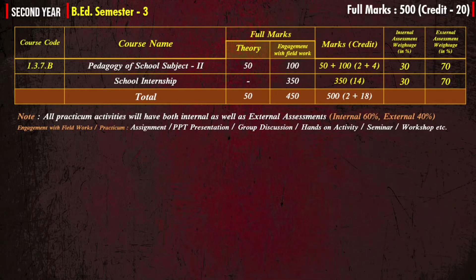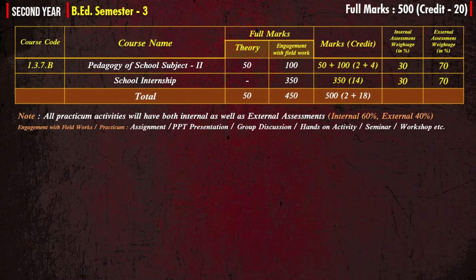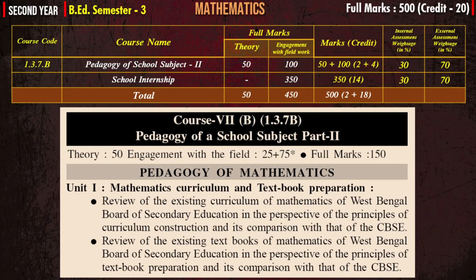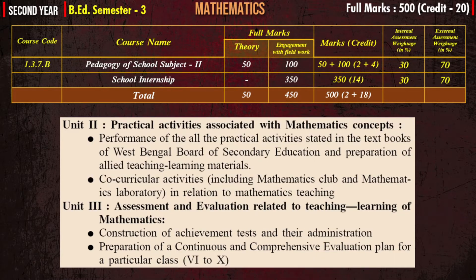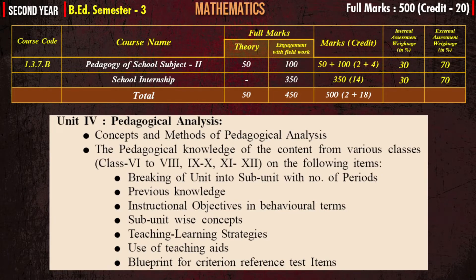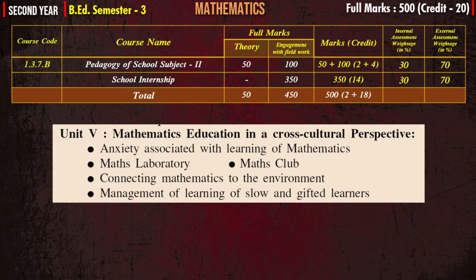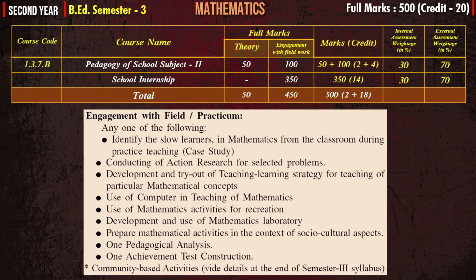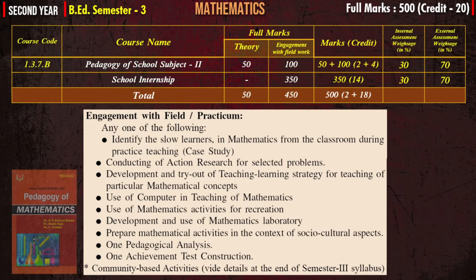In B.Ed Semester 3, Course 1.3.7B, you have to read Pedagogy of School Subjects 2 and school internship. In mathematics pedagogy, Unit 1 covers mathematics curriculum and textbook preparation. Unit 2 covers practical activities associated with mathematics concepts. Unit 3 is assessment and evaluation related to teaching-learning of mathematics. Unit 4 covers pedagogical analysis and Unit 5 covers mathematics education in a cross-cultural perspective. In engagement with fieldwork practicum, you have to do one practicum from the given options.